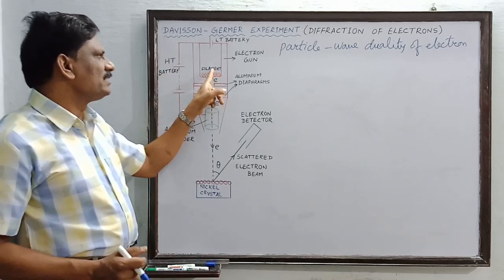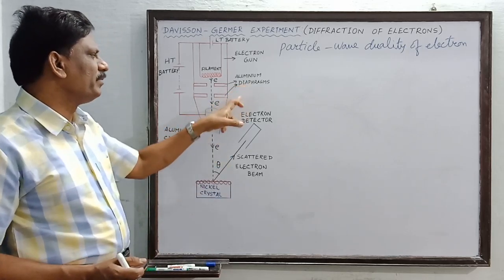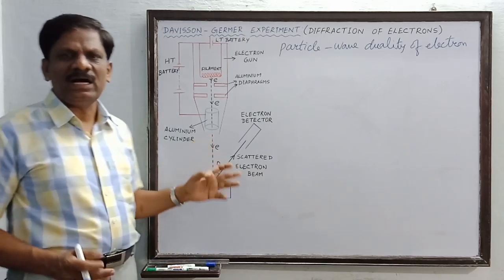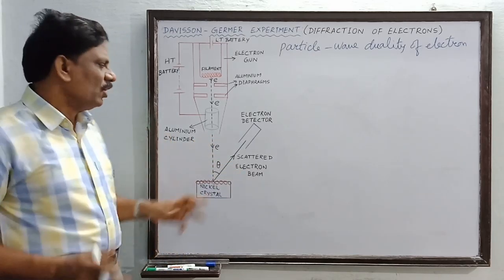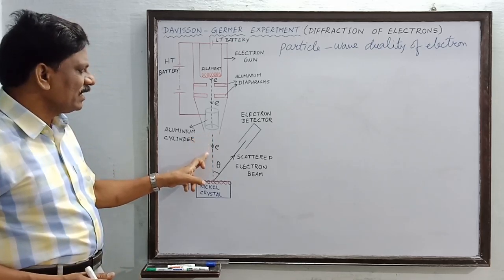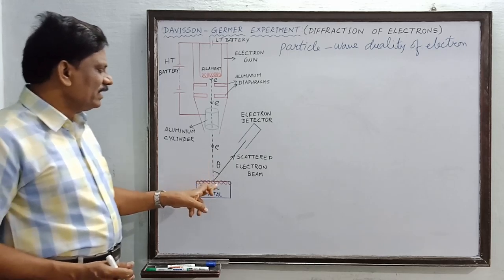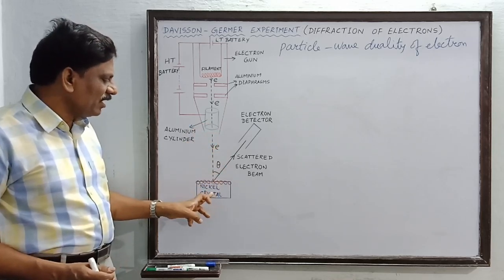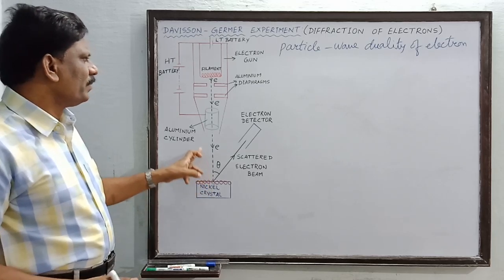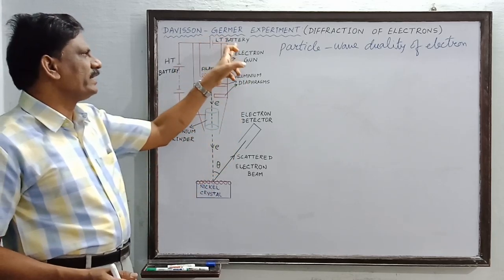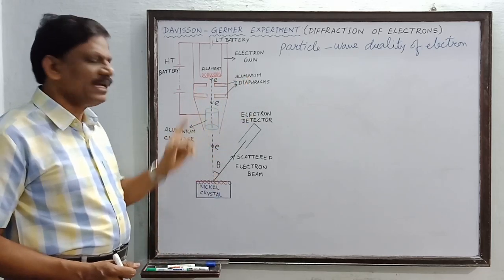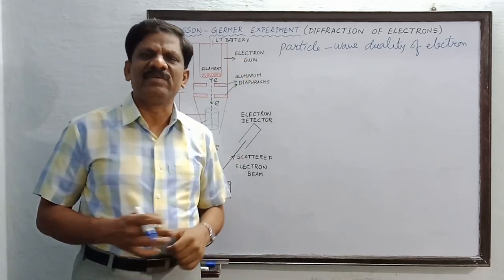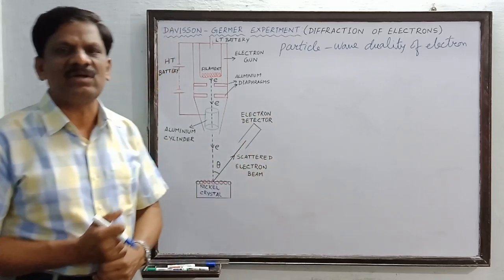The electrons emitted by the filament, after being collimated by the two aluminium diaphragms, are accelerated and attain sufficient energy, coming out through that hole. These accelerated electrons attain a sufficient wavelength, and they now behave like waves. This arrangement — consisting of the low-tension battery, the filament, the aluminium diaphragms, and the aluminium cylinder — is together called the electron gun. Just like bullets are fired from a gun, here electrons are fired from this arrangement.